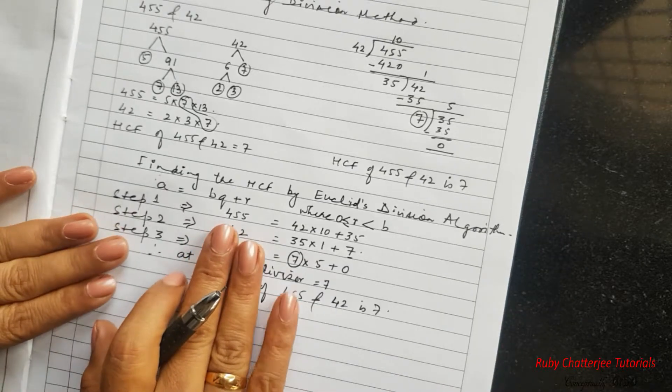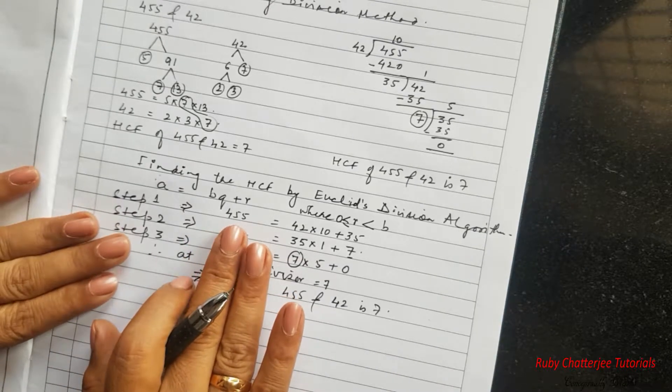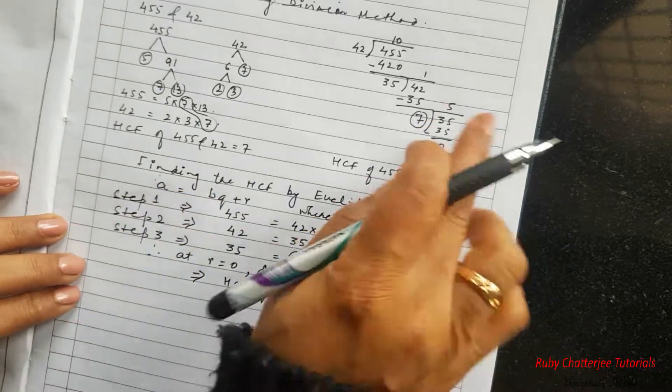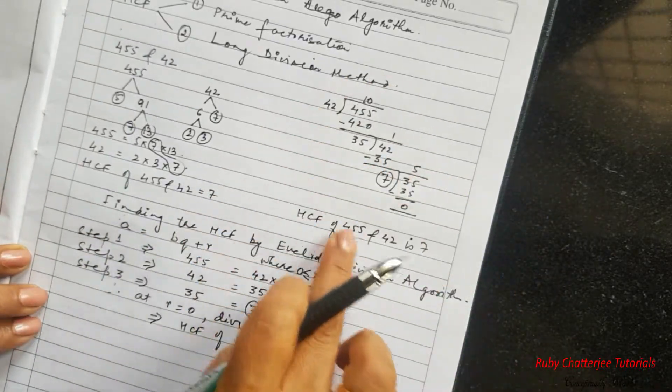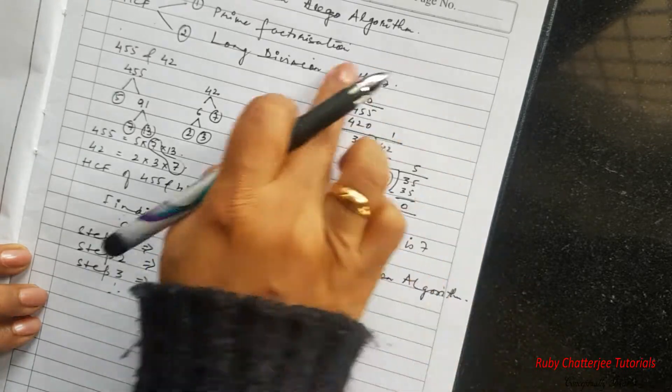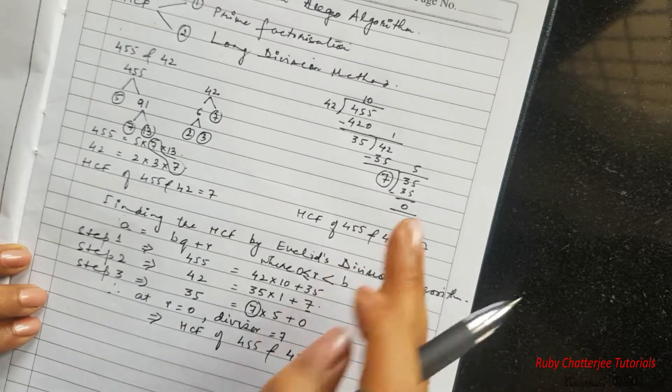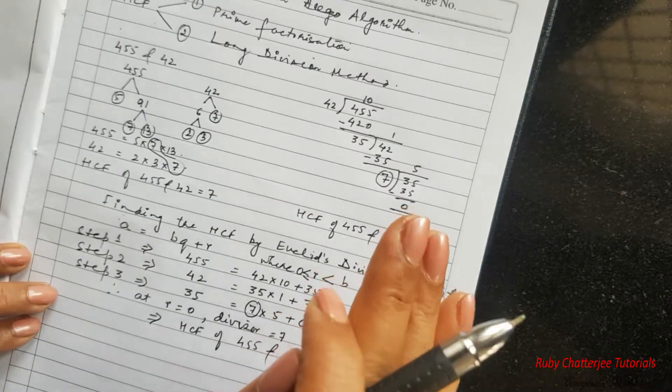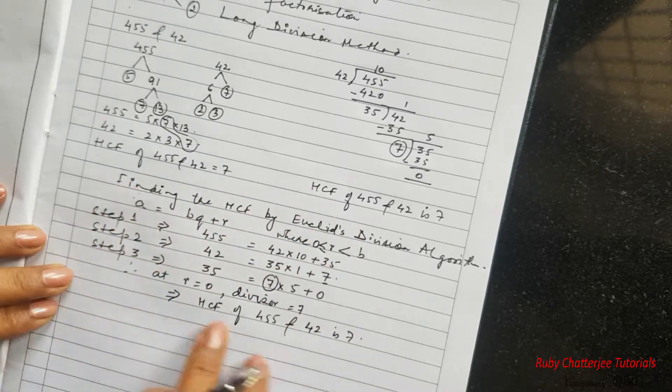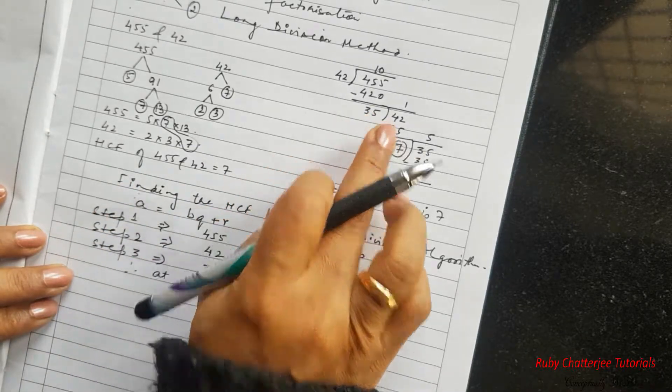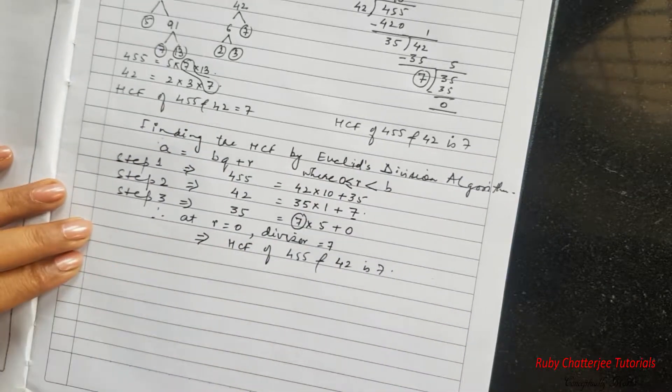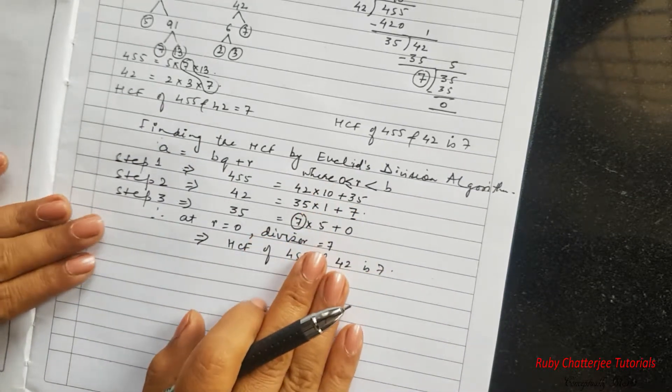Basically in your board examination you are going to be evaluated for these steps only, not for this work which is done. This is for understanding and this can be your rough work because it makes it easier for you to find out the HCF by long division rather than trying to mentally do these various steps. So do it as a rough work and this will be your main work. So I hope you have understood the specific example.